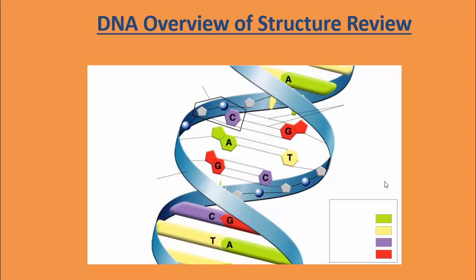Here is an overview of our double helix DNA structure. We have our backbones, which is called a sugar phosphate backbone. The sugar in DNA is deoxyribose — so we have a deoxyribose sugar and phosphate backbone. Here is our sugar and here is our phosphate. And if we have a sugar, a phosphate, and a nitrogen base, we get a nucleotide.